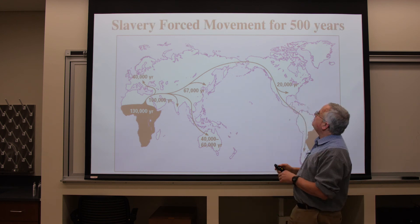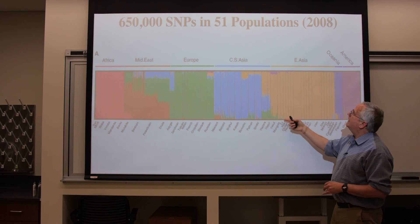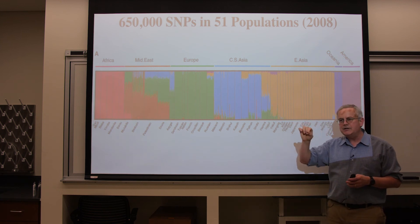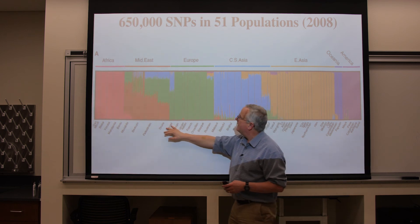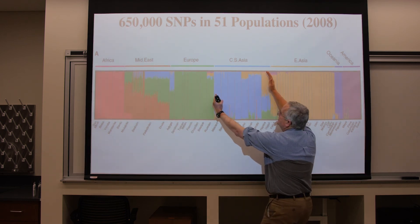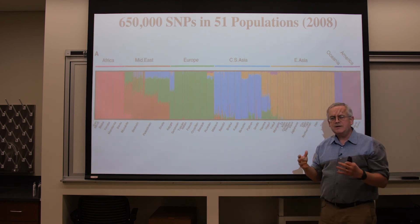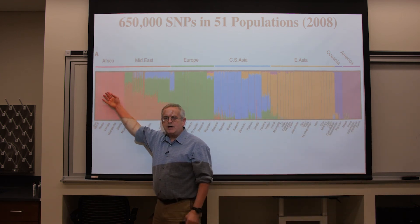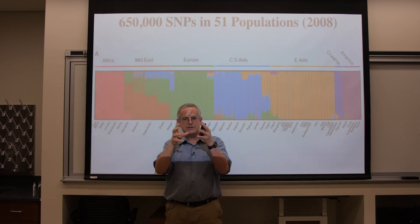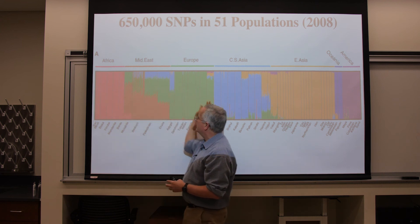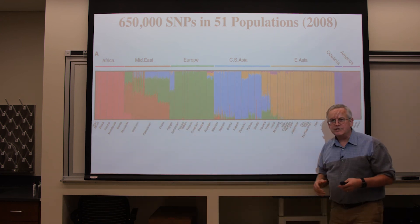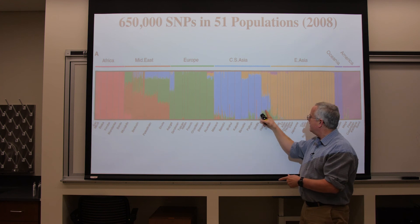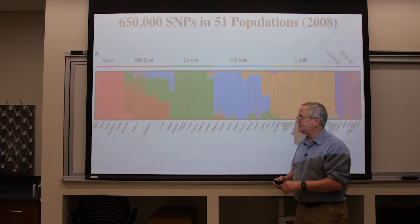A 2008 study looked at different populations around the world and tried to find which SNPs distinguish different populations. All these different regions of the world show overlapping colors because we're related and had a continuum of migration. The only area with some truly unique SNPs is Africa, because that large population stayed there the whole time, giving Africa more genetic diversity than the rest of the planet combined. All other regions — and these are regions, not races — have some SNPs that let you say your DNA came from this area, but the mixed colors mean we can't determine this with great precision, only general areas.